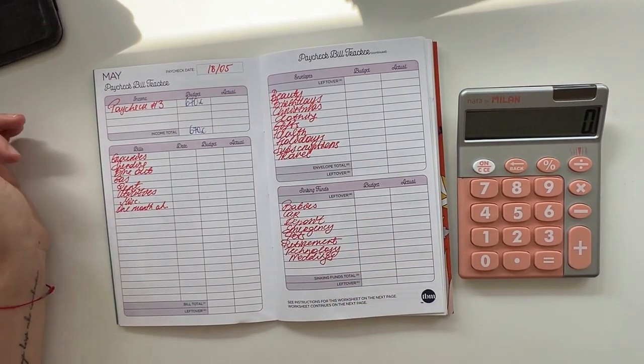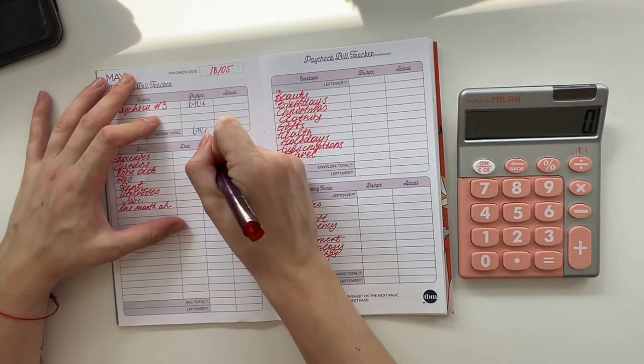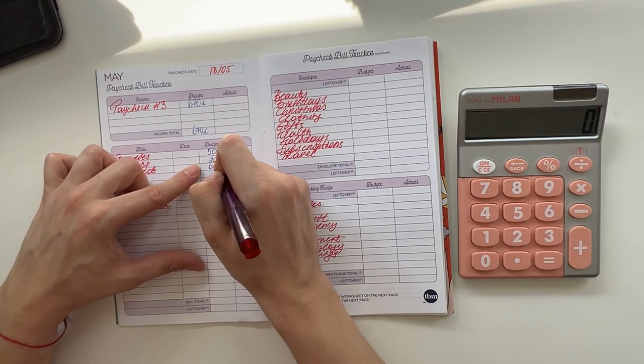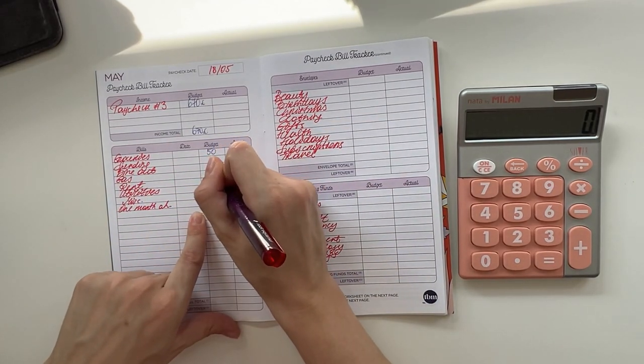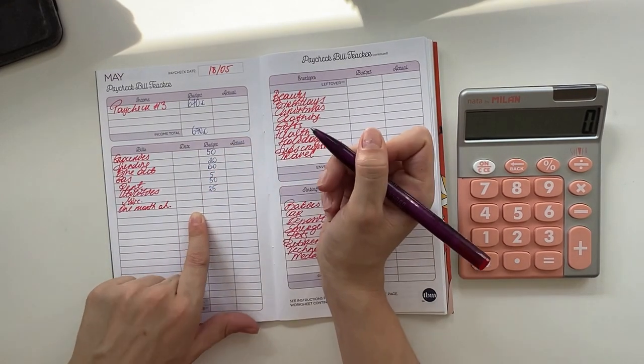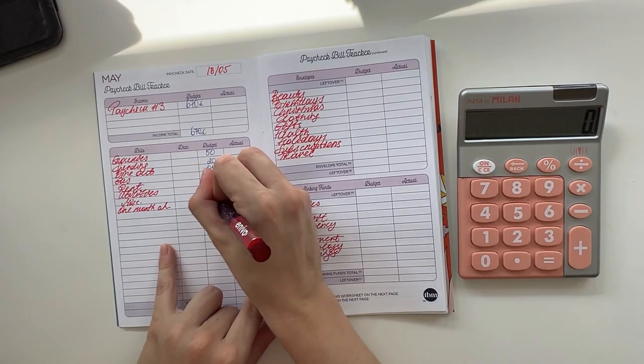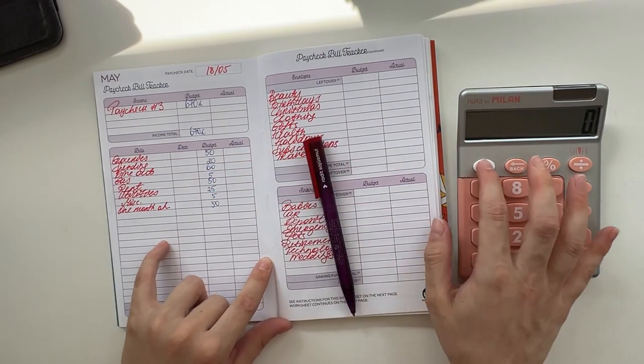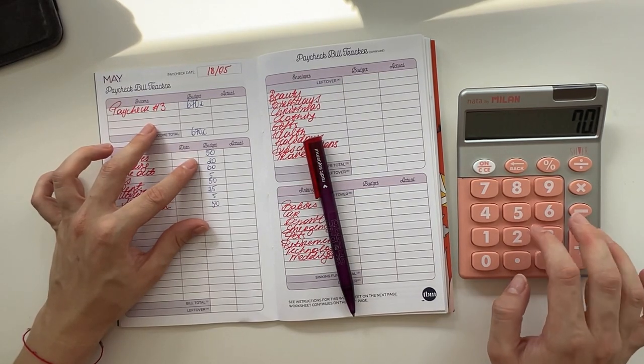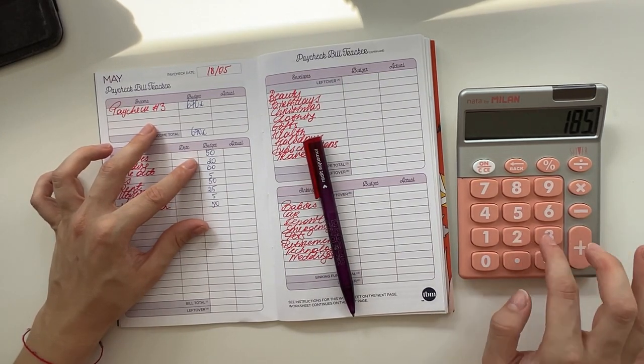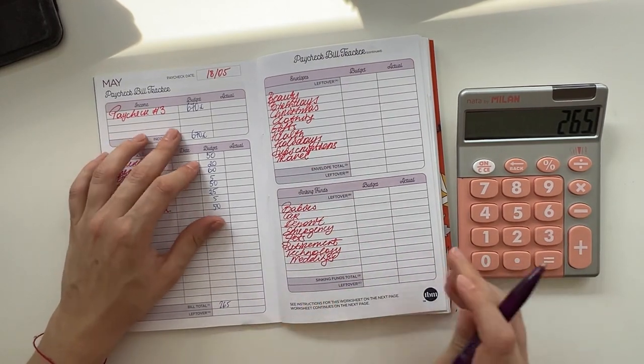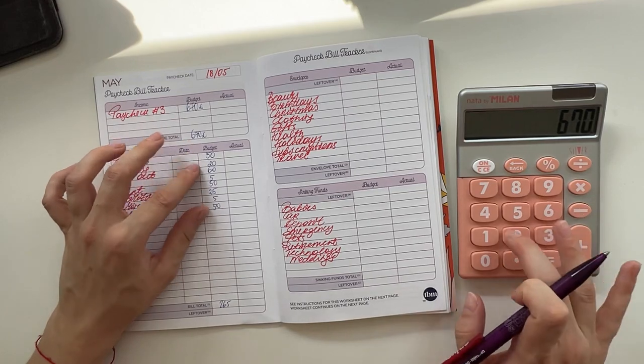Groceries is going to get 50, spending 20, dine out 60, we're going to put 5 into gas, rent is going to get 50, utilities 25, miscellaneous is going to get 5, and one month ahead 50. In total for cash envelopes and bills we will have 265 allocated, so 670 minus 265 is 405.